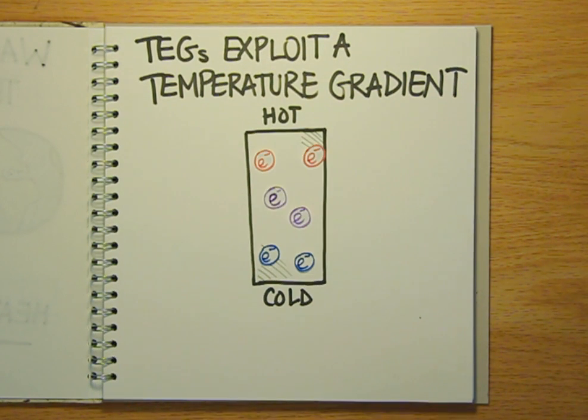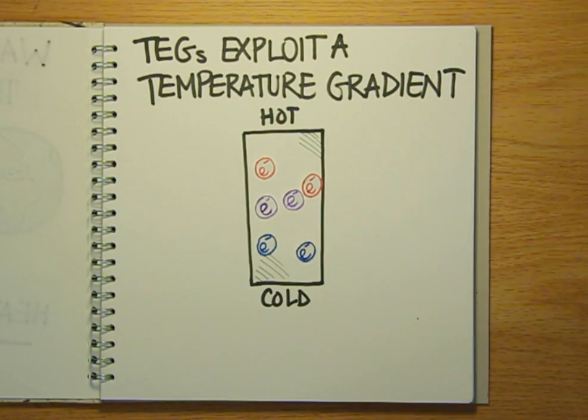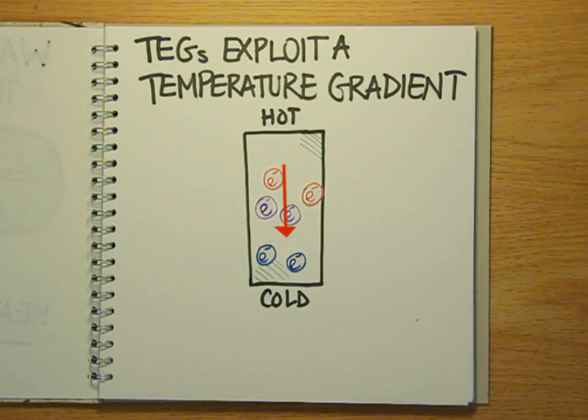This means the hot electrons will be jiggling around faster than those at the cool end, so they'll tend to move towards the cold end faster than the cold electrons will move towards the hot end. Eventually, the cold end will become more negatively charged and the hot end will become positively charged.